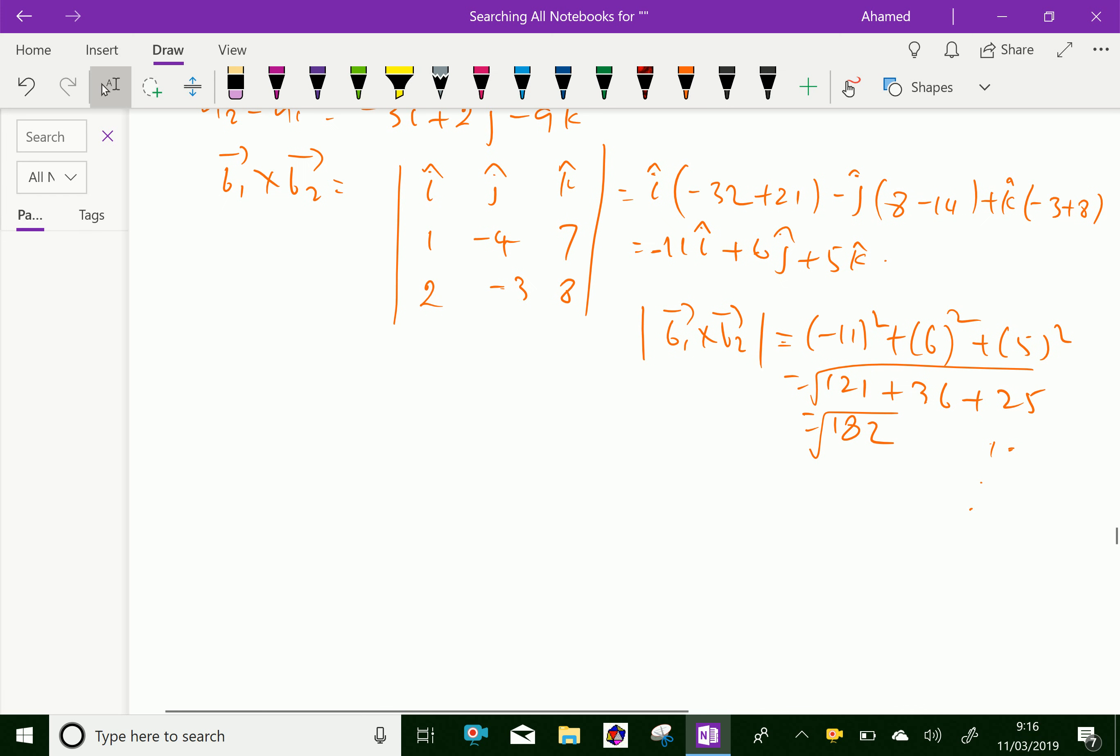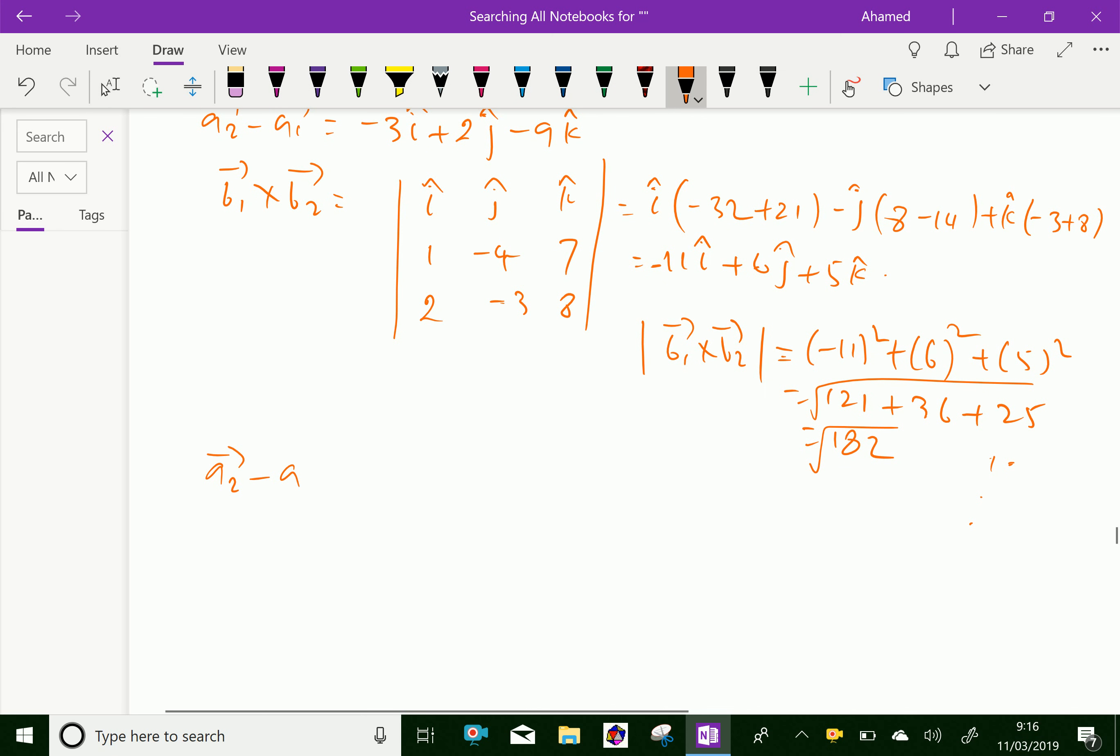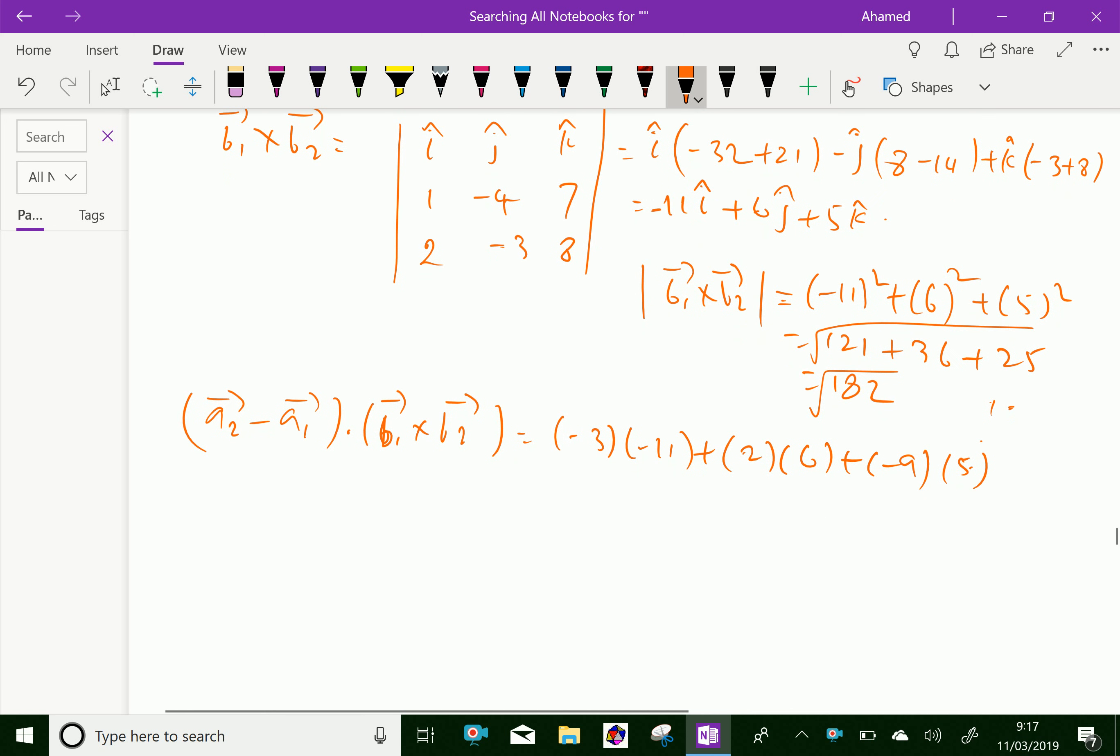Now we will find the dot product of a2 minus vector a1 dot b1 cross b2 vector equals minus 3 into minus 11 plus 2 into 6 plus minus 9 into 5. We get here 33 plus 12 minus 45. 33 plus 12 is 45, 45 minus 45 is 0.